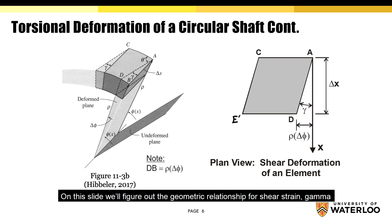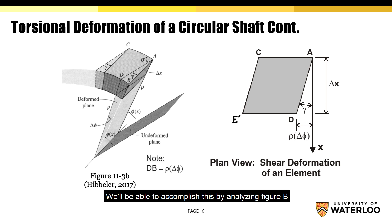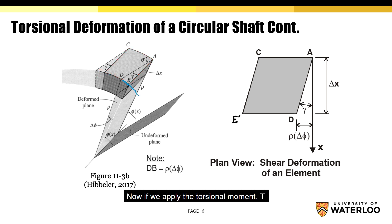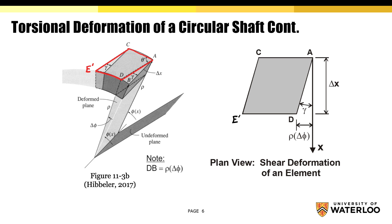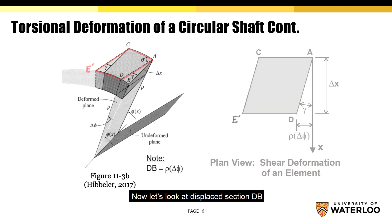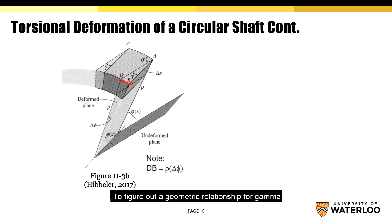On this slide, we'll figure out the geometric relationship for shear strain gamma (γ) by analyzing figure B and the plan view of the element. The rectangle C-A-B-E represents the element before deformation. If we apply a torsional moment T, the side E-B shifts in the counterclockwise direction, creating a new rectangle C-A-D-E prime. The diagram on the right represents the plan view of the deformed element. To figure out the geometric relationship for gamma, we'll use segment D-B and break it up into known variables.